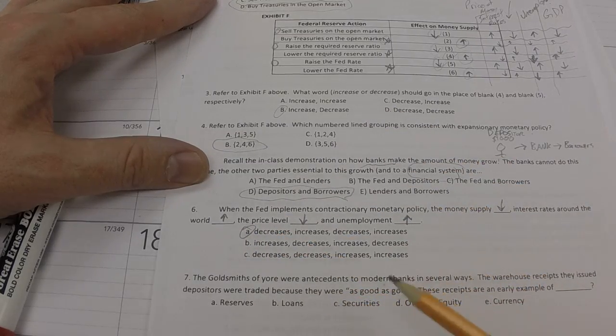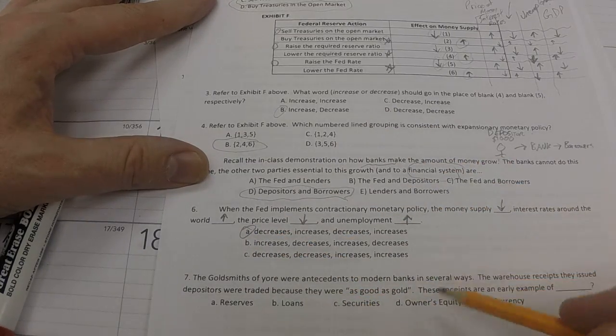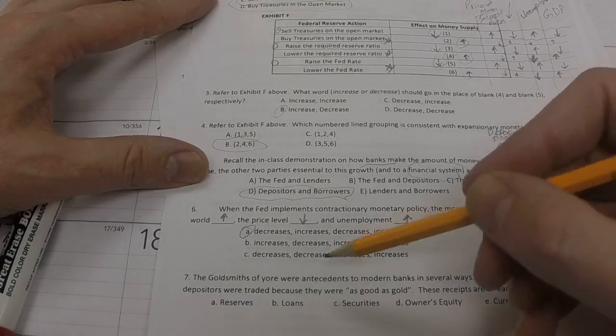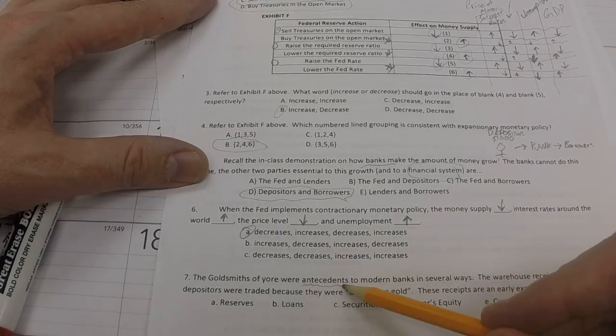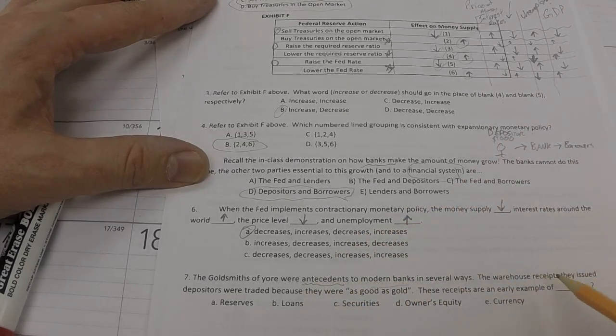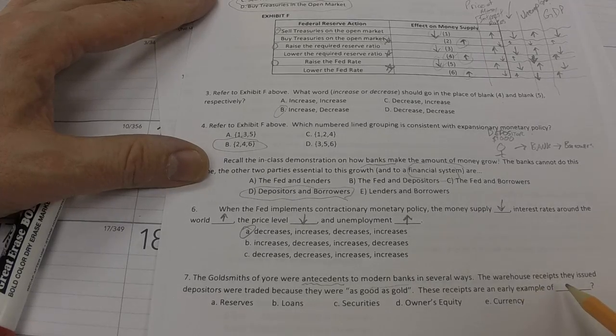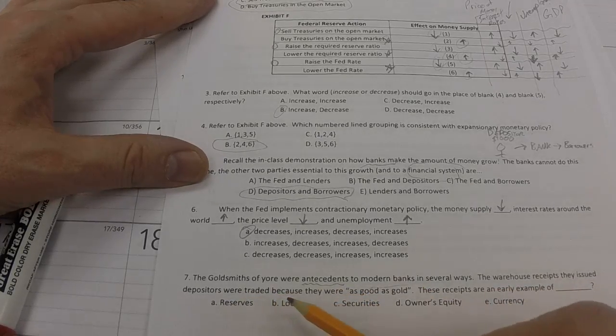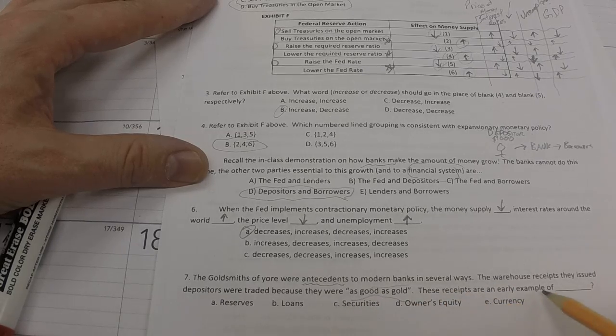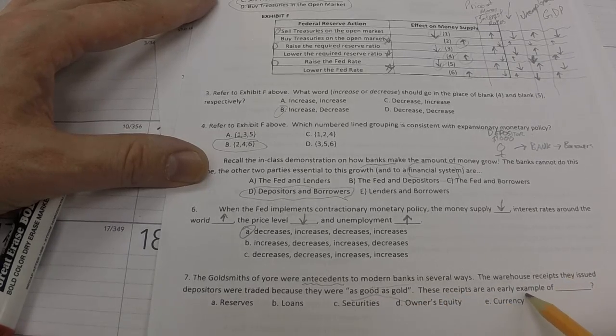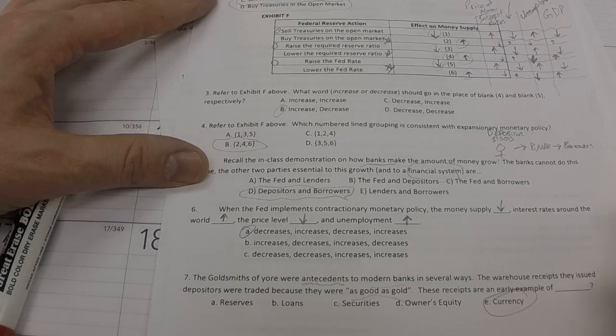Next question. The goldsmiths of yore were antecedents to modern banks in several ways. Meaning they preceded what modern banks are. One of the ways they did is they used warehouse receipts to depositors that were traded because they were as good as gold. These receipts are an early example of currency. Very good.